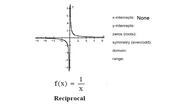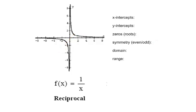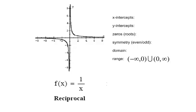No x-intercepts, no roots, no zeros, no y-intercepts. This function is an odd function — it is symmetric about the point of origin. The domain of this function is all real number values except 0, and the range of this function is also all real numbers except 0.